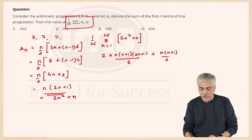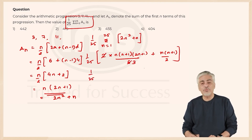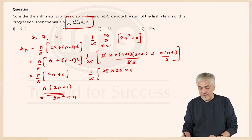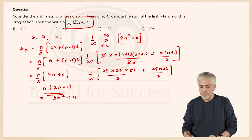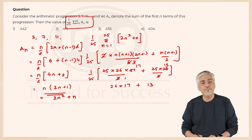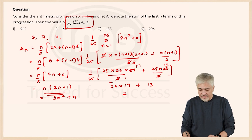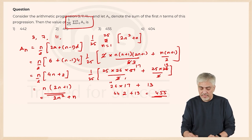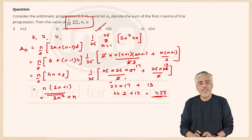With the 1/25 outside: (1/25) × [2 × 25 × 26 × 51/6 + 25 × 26/2]. The 2 cuts here, giving 25 × 26 × 51/3, plus 25 × 26/2. The 3 cuts to give 17, the 2 cuts to give 13, and the 25 cancels in both terms. We're left with 26 × 17 + 26 × 13... so 26 × 17 = 442, plus 13 = 455. That's the third option — 455.